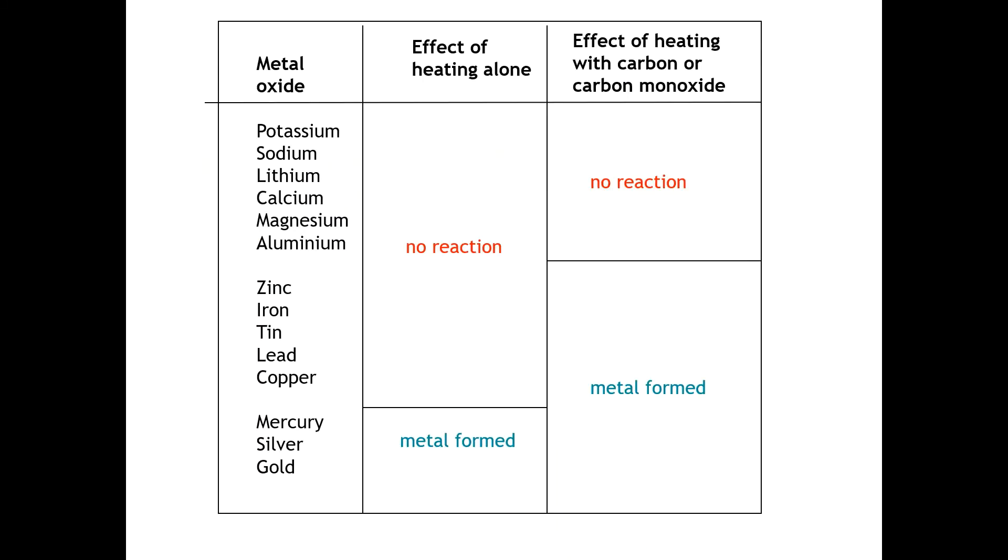To summarize, heating alone will allow you to extract mercury, silver, and gold from its ore, but it will not allow you to extract more reactive metals such as zinc, iron, lead, copper, and alkali metals. To extract zinc, iron, tin, lead, and copper, heating with carbon or carbon monoxide will allow the metal to be extracted from the ore. These more reactive ones need to be extracted via a process called electrolysis.